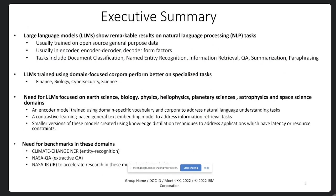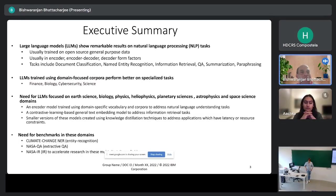Here is a high-level summary of what we will cover. Large language models do remarkably well on natural language processing tasks, including document classification, named entity recognition, information retrieval, question answering, summarization, paraphrasing, and more. Generally, large language models are trained on open-source general-purpose data such as Wikipedia, Common Crawl, or Open Web Text. These models come in different form factors — encoder models or decoder models — which we will cover.